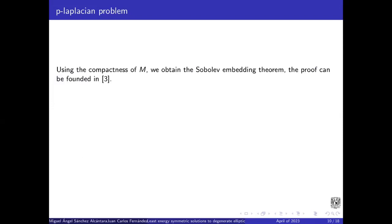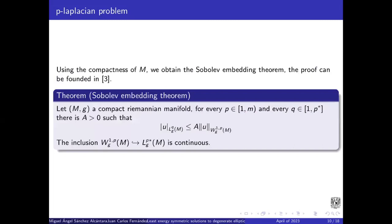Using the compactness of M, we obtain the Sobolev embedding theorem. And the proof can be found in the book of Hebey and Aubin, that it's called Nonlinear Analysis on Riemannian Manifolds. Let (M,g) be a compact Riemannian manifold. For p belonging to this interval and Q from this interval, there is a positive constant such that the norm of the function u on L^Q is less than the product of this constant and the norm of the function on the Sobolev space. In particular, this inclusion is continuous.